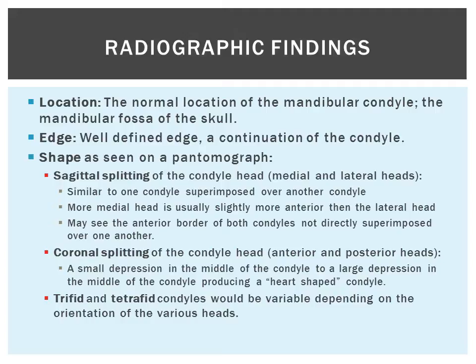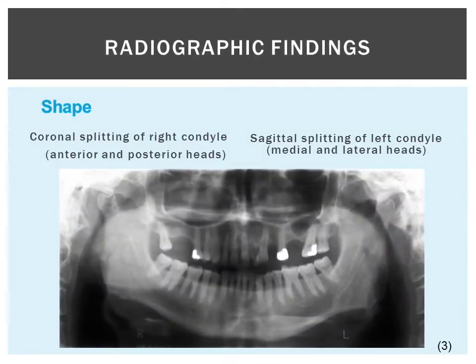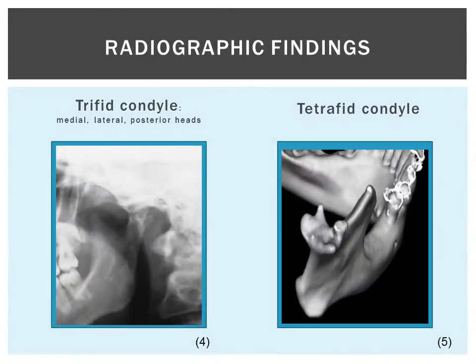There are also trifed and tetrafed condyles, which have various shapes depending on the orientation of their heads. This pantomograph shows a coronal splitting of the right condyle with anterior and posterior condylar heads, and a sagittal splitting of the left condyle with medial and lateral condylar heads. On the left is a picture of a trifed condyle with medial, lateral, and posterior heads, and on the right is a picture of a tetrafed condyle with heads in various positions.